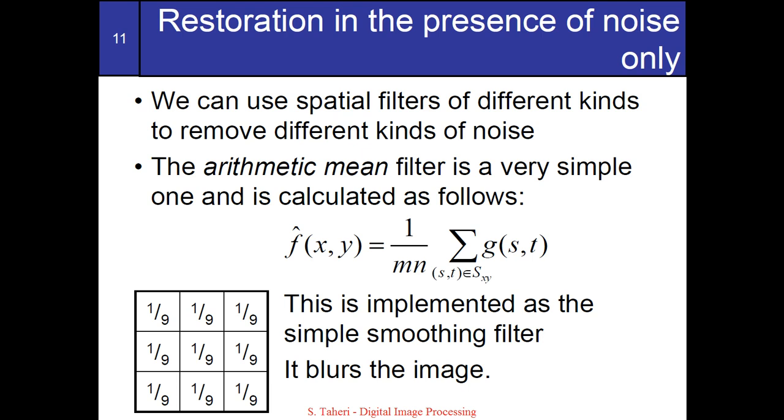The arithmetic mean filter, also known as averaging or low-pass filter, is a simple process of replacing each pixel value with the average of an n by n window surrounding the pixel. The average filter can be implemented as convolution.